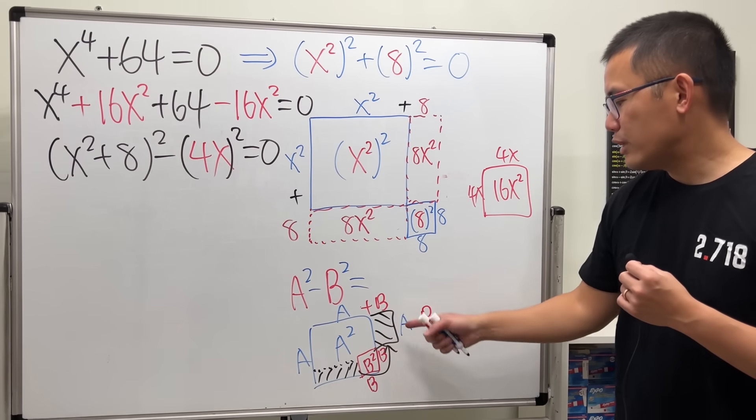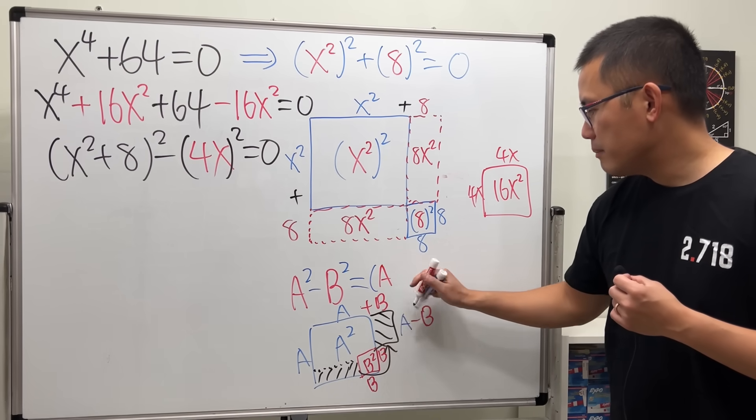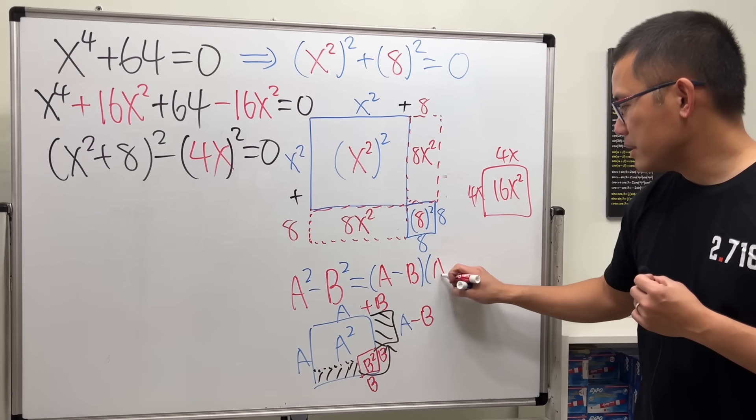But usually, I like to write this down first. So, this right here gives us a minus b times a plus b.